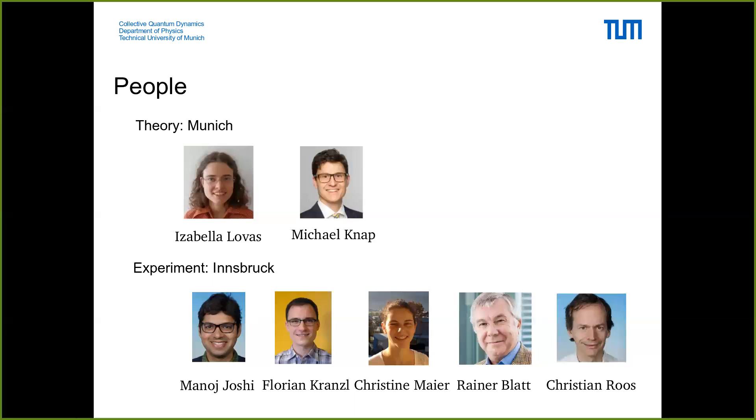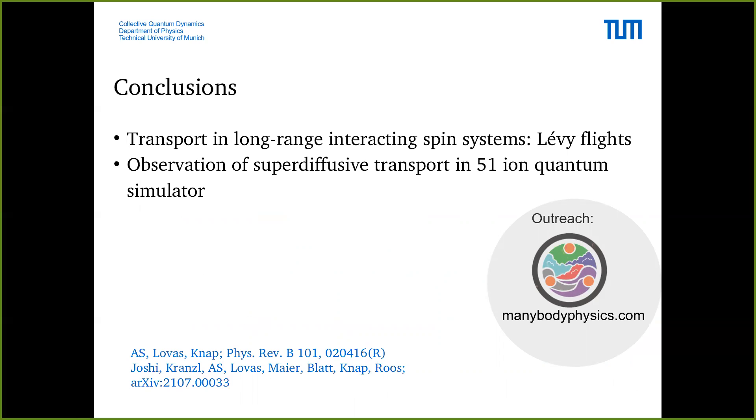With that I want to end and thank the people who are involved. The theory was done in Munich under supervision of Michael Knapp and Isabella and I worked together on developing the classical method. In Innsbruck the experiment was carried out especially by Manoj and Florian who were doing the hard work in the lab. Here are my conclusions and if you want to find out more you can check out these papers and also you can check out our outreach effort. If you want to join in with that it would be great to receive a message from you. Thank you.